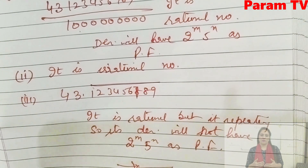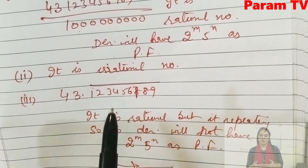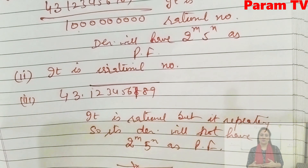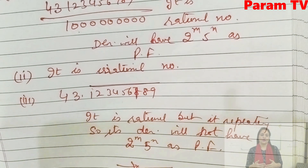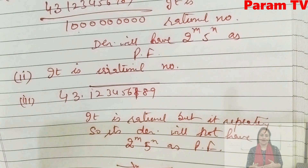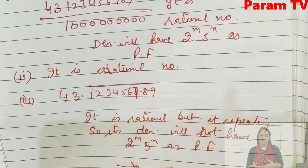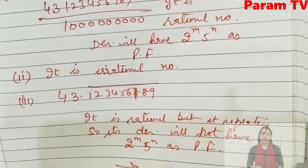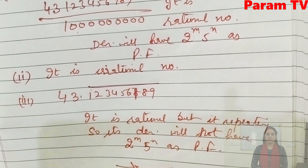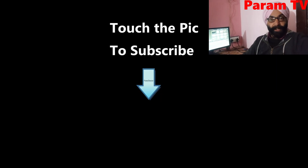This is all we want to say about the denominator of this term. So this is all about Exercise 1.4. I hope you have got it. Please recall rational and irrational numbers properly, and then this will be very easy to understand. Thanks a lot, thank you so much for watching this video.